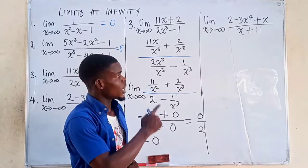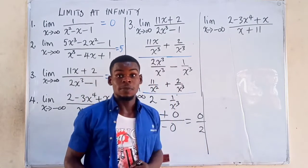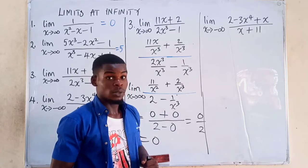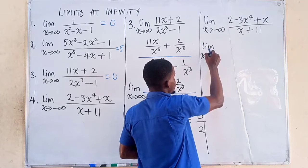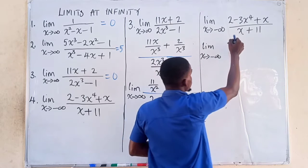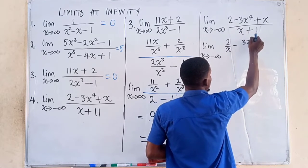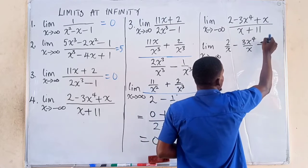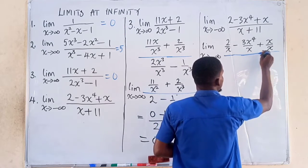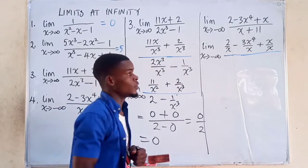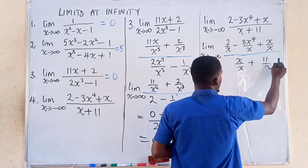Here, the highest power of x in the denominator is 1 — this is just x raised to the power of 1. So when we divide numerator and denominator by just x, we get the limit as x tends to negative infinity of: 2 over x minus 3x⁴ over x plus x over x, all divided by x over x plus 11 over x.